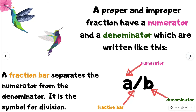A proper and improper fraction have a numerator and a denominator, which are written like this. You have A over B. A fraction bar separates the numerator from the denominator — it is the symbol for division.